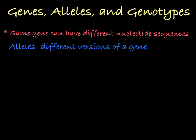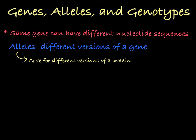Each allele has a slightly different nucleotide sequence, and therefore codes for a slightly different version of the protein associated with the gene. In classical genetics, we usually see genes that only have two possible alleles, but there are genes that have many different possible alleles. For the TYR gene, there are more than 100 different variations, each coding for a slightly different version of the protein.